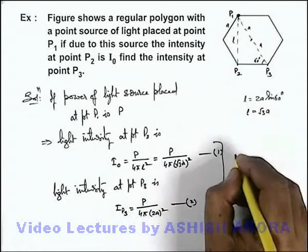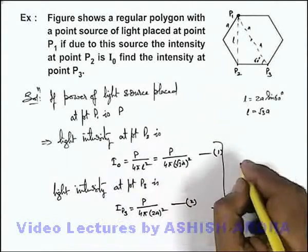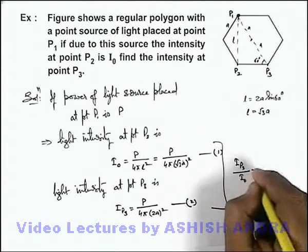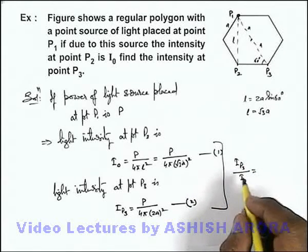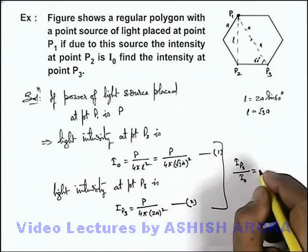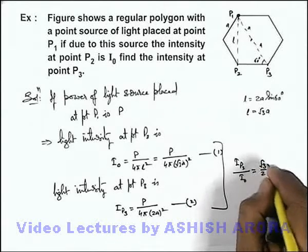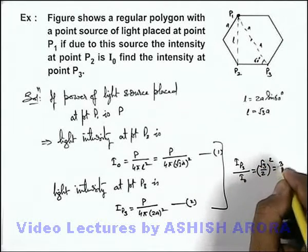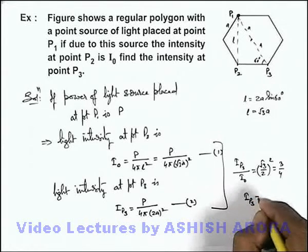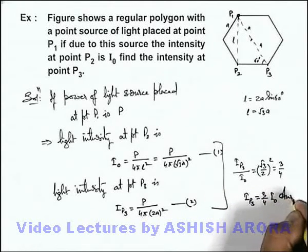Now from these two equations, we can consider if we divide the two equations: I_P3 divided by I₀. If you divide I_P3 by I₀, you can see you are getting (√3/2)² that will be equal to 3/4. So intensity at point P3 we can write as (3/4)I₀. That will be the answer to this problem.